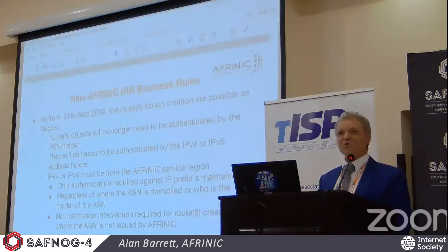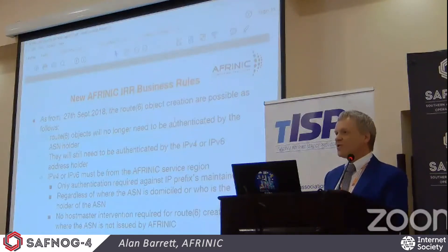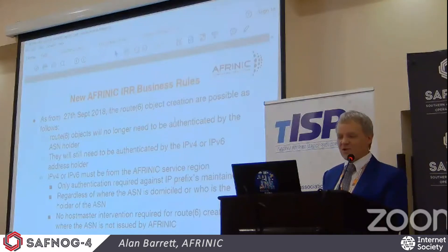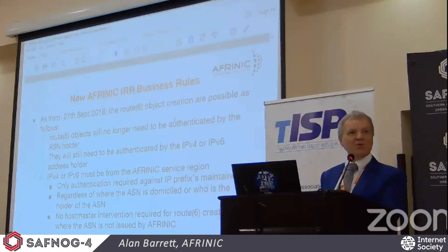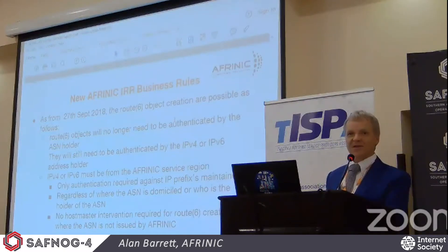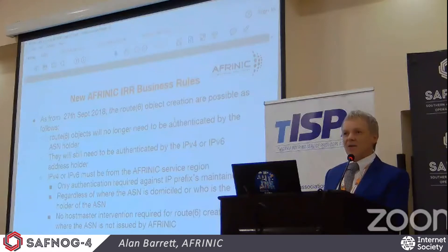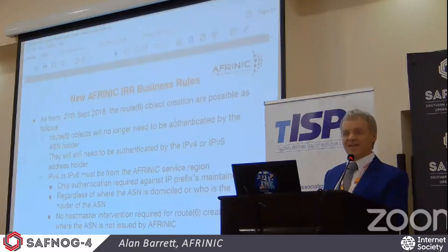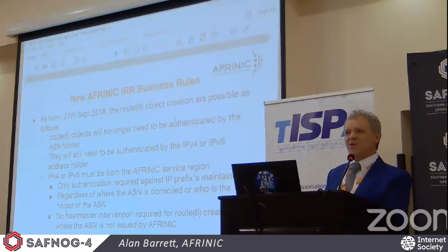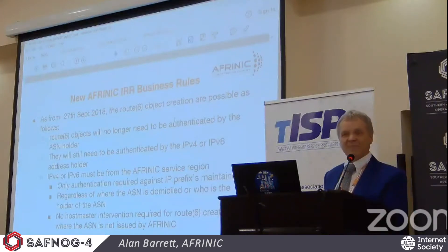The pain will be quite short-lived. Later this week, on Thursday, we're planning to deploy a new version of the database code which will remove the need for dual authentication. The route object will only need to be authorised by the maintainer of the IP address space — the IPv4 or IPv6 address space. We no longer care where the AS number came from. We verify that it's a real AS — not unallocated or reserved — but we don't care whether it's an AFRINIC AS number or from some other RIR.